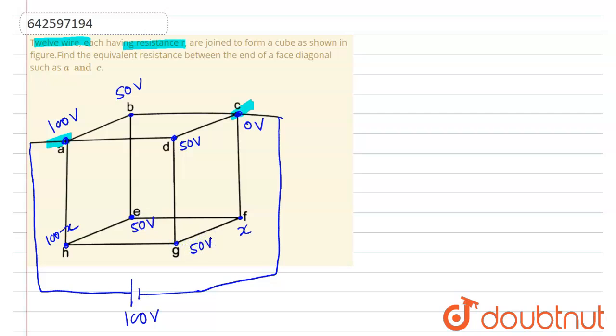Now, as we can see, from here and here the current flow will be I₁ and I₁ because the potential difference is the same. Here will be I₂. So the total current I equals 2I₁ plus I₂.